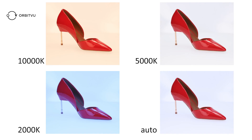Different types of light will have a different color temperature measured in kelvins. A candle flame has approximately 1800 kelvins, tungsten light has 3000 kelvins, and our lamps produce a color temperature around 5600 kelvins, which allows us to recreate natural looking colors.